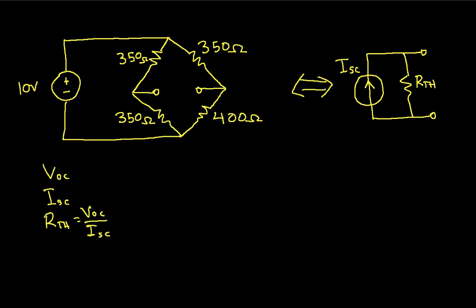So to begin with, we need to find the open circuit voltage. We are finding the Norton equivalent with respect to these two terminals, so the first thing we need to do is find the open circuit voltage across these two terminals.